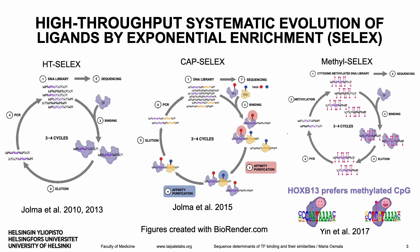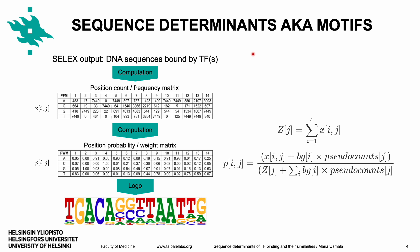SELEX results in a set of sequences that a TF or TF pair binds to, from which the motif is derived. First, the sequences are processed into a position count or frequency matrix, which is further transformed to a position weight matrix, or PWM. The PWM indicates the binding affinity of a TF to different sequences in probabilistic terms. This matrix, often represented as a sequence logo, shows the probability of each base at each binding site position.